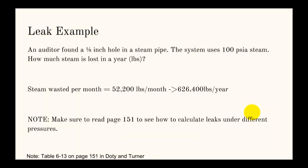Now let's go to our last example. This is just a leak example. When you find a leak in a steam pipe, and the system is using 100 psi steam, we're trying to figure out how much steam is lost in a year. The nice part is there's a nice table that does this, that shows how much steam is lost in a year on page 151 of Doty and Turner, table 6.13. It gives you the 52,200 pounds per month of steam wasted. Then you can multiply by 12 to get the pounds per year. However, this table is only for 100 psi steam. You want to make sure you read that page to figure out how you would correct if it's a different pressure steam line. So those are some of the boiler and steam calculations for the CEM.